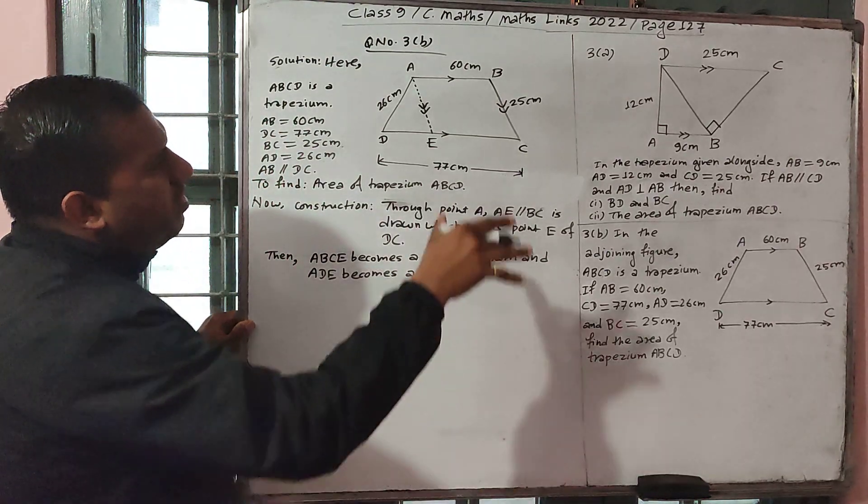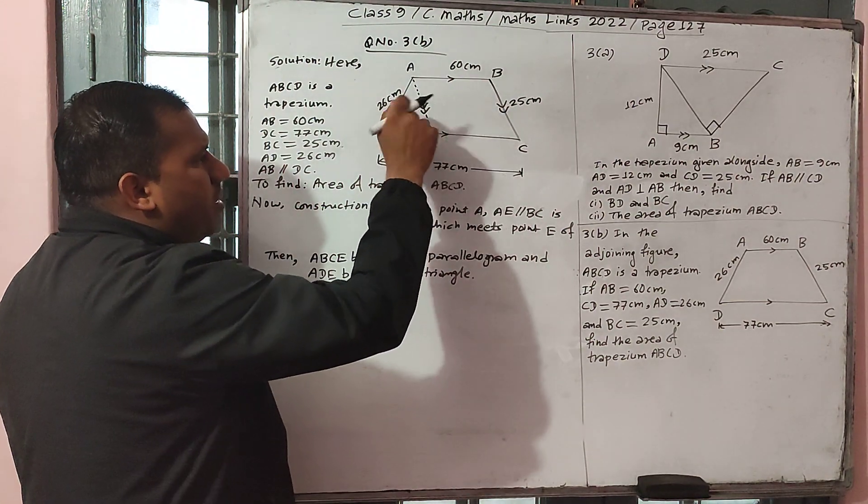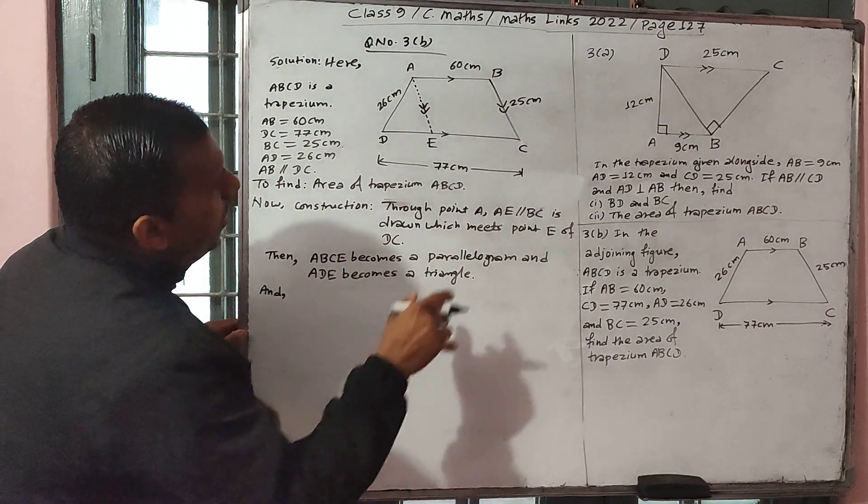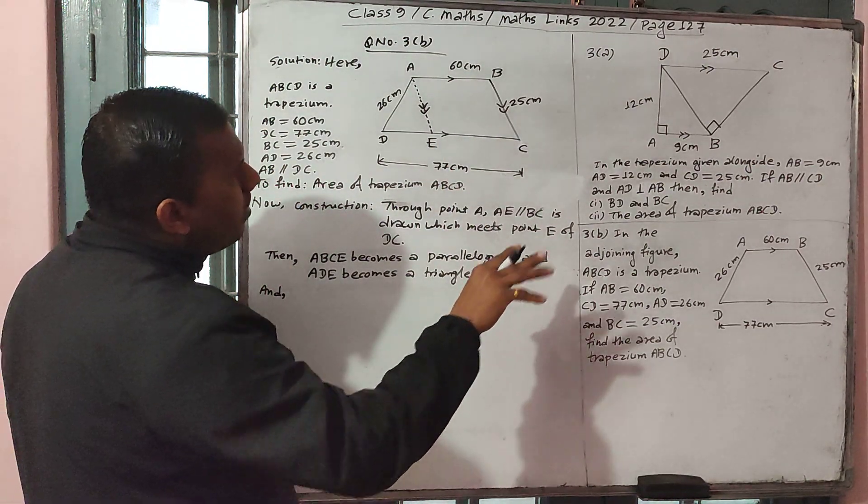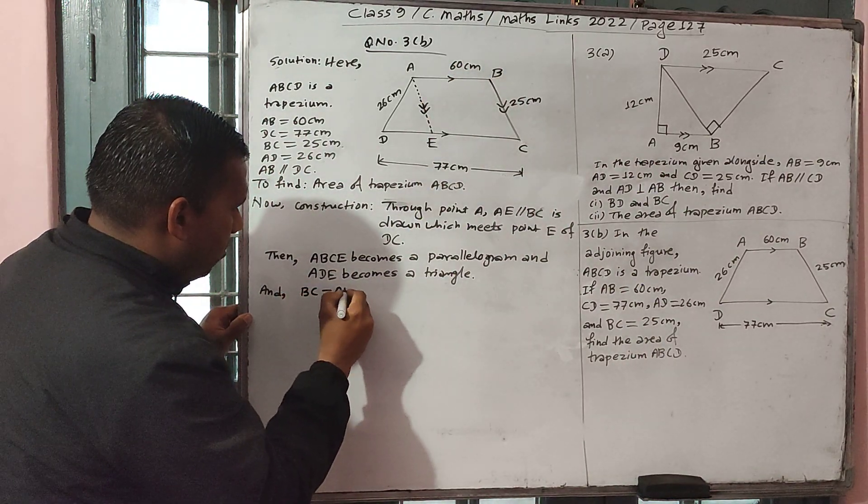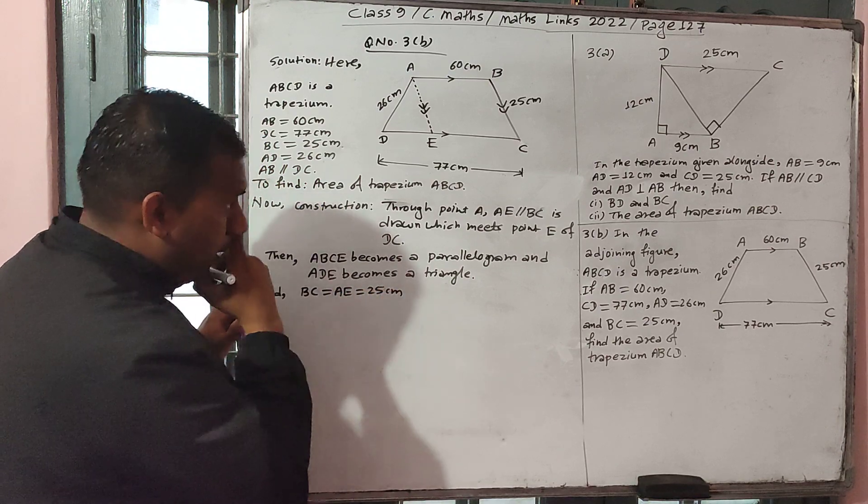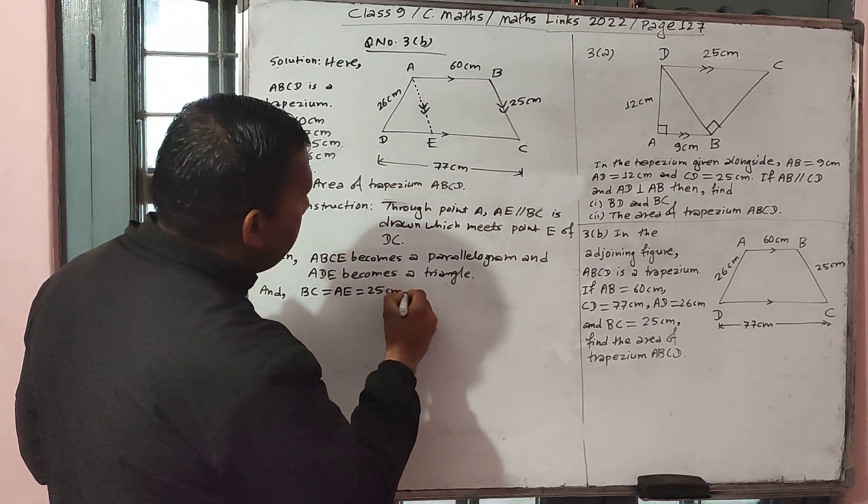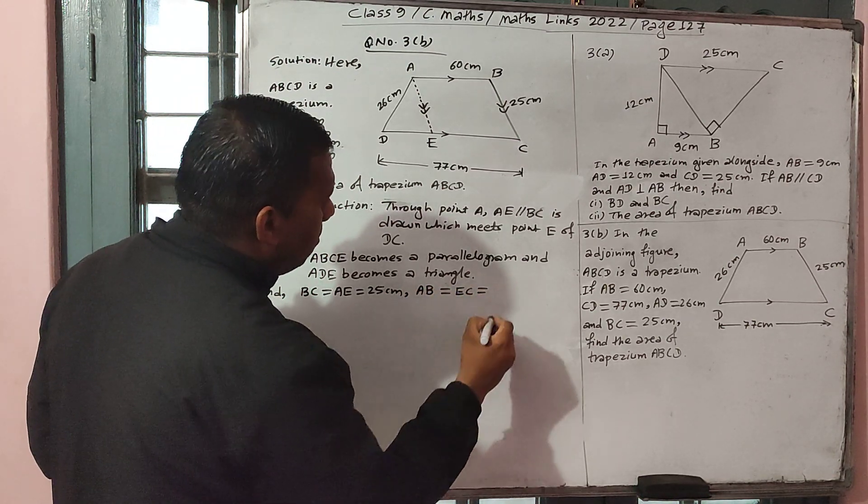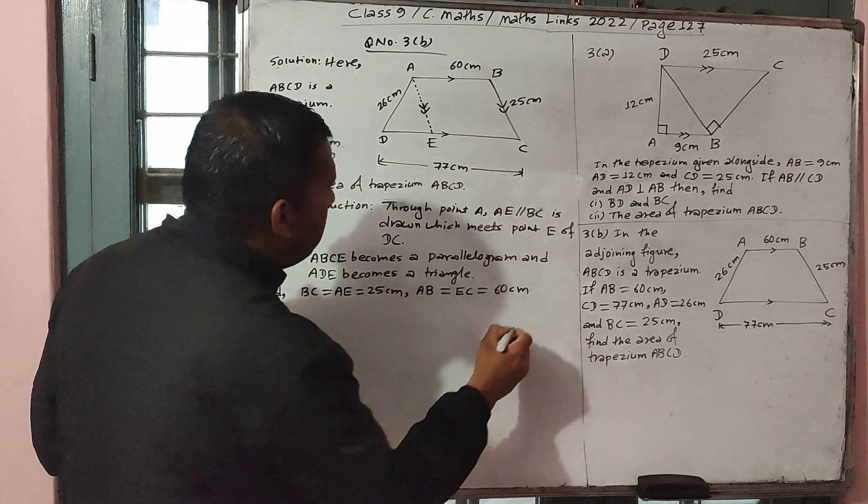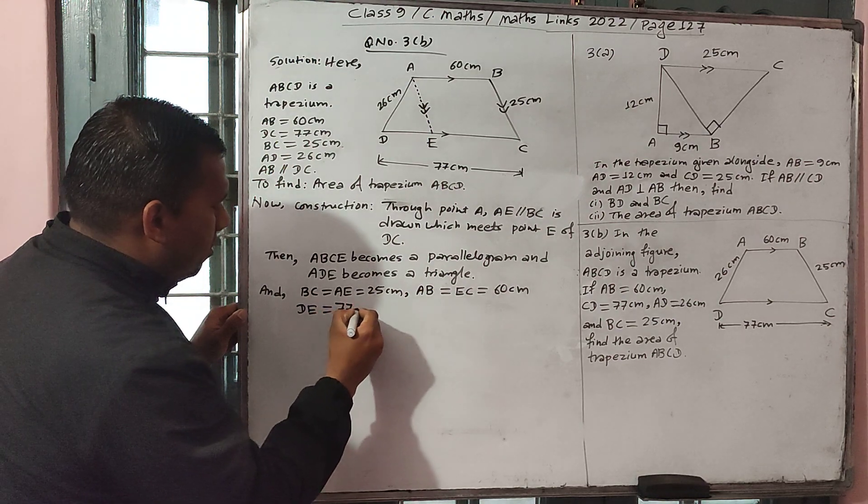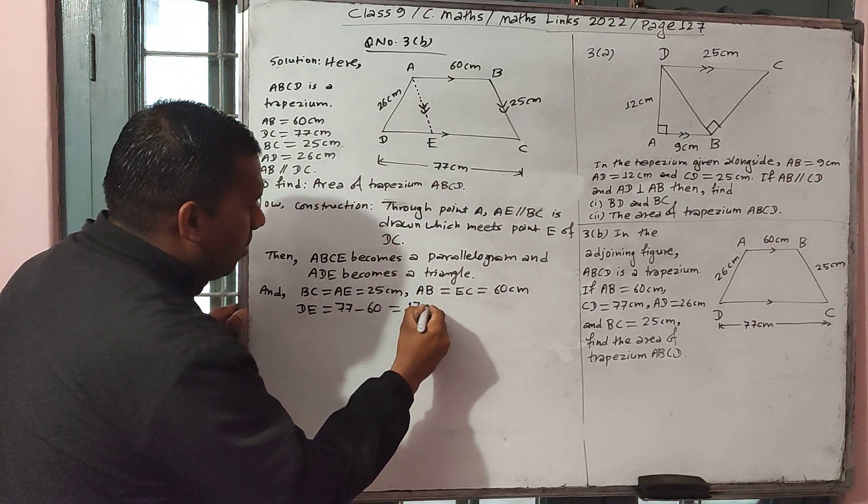ADE becomes a triangle. The trapezium is divided into two parts: first part parallelogram, second is triangle. In this diagram, opposite sides are equal, so BC equals AE equals 25. Similarly, AE equals AB equals 60 centimeter. DE equals 77 minus 60, equal to 17 centimeter.